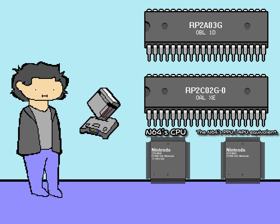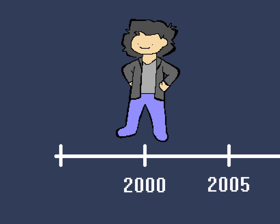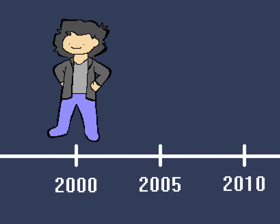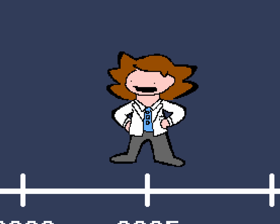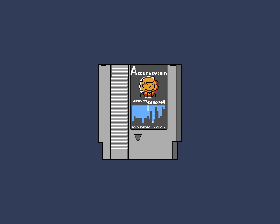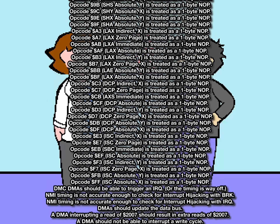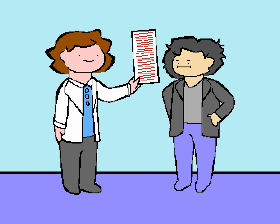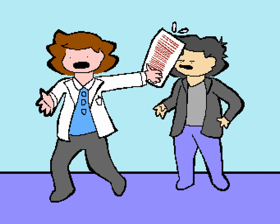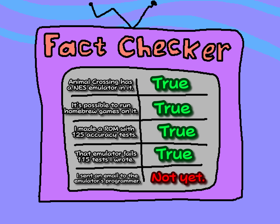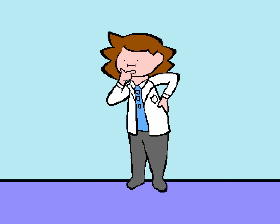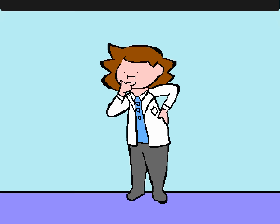For both consoles. And then 25 years after you've figured it all out, someone on the internet made an accuracy test ROM and ran it in your NES emulator and gave you a list of 115 things you did wrong. Has that ever happened to you? Well, that did happen. And it all began when an interesting thought entered my mind.